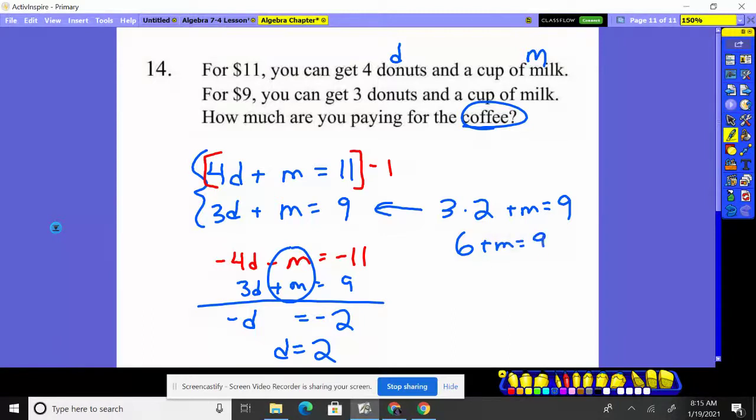Six plus milk equals 9. Subtract 6, and milk costs $3. It's like a gallon of milk at the grocery store, but hey, you're in a restaurant. Got to have that milk with your donuts. There's your answer to number 14.